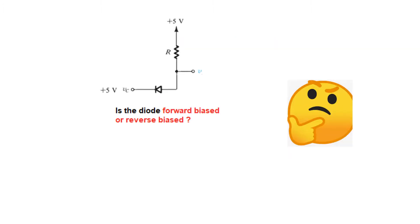Now let's start with the puzzle here. This is the circuit and we have 5V here and also positive 5V here. The question is, is the diode forward biased or is it reverse biased? We know that in the case of a normal diode,